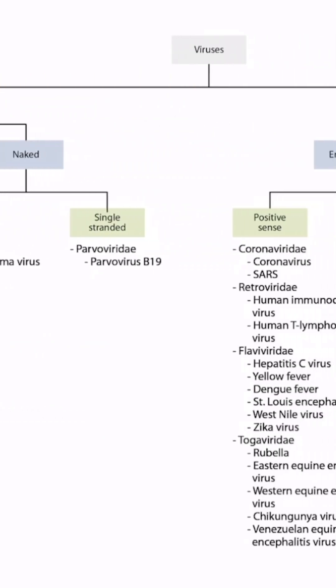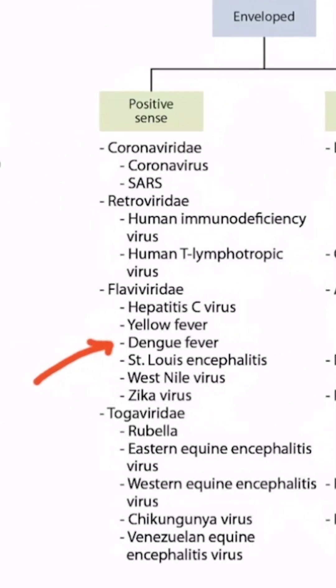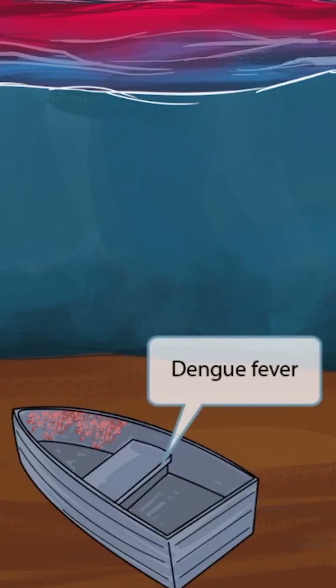In this section, we will be discussing dengue fever, which you can see right here. Our dengue fever story takes place on this pretty little seabed. We can see this old abandoned dengue right here on the bottom of the ocean floor. A dengue is a small boat, such as this one at the center of our story, and this dengue will help you remember dengue fever.